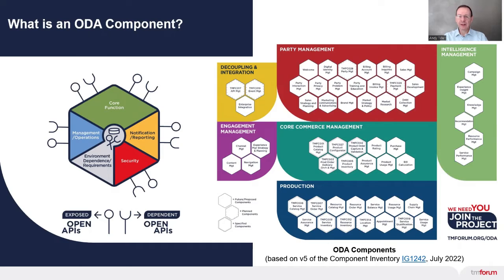We represent ODA components by this hexagon shape, where the green rhombus at the top describes the functional scope. For example, a product catalog management component has certain functionality it needs to have and to expose via open APIs, represented by the lollipop sticking out at the edges of the hexagon.